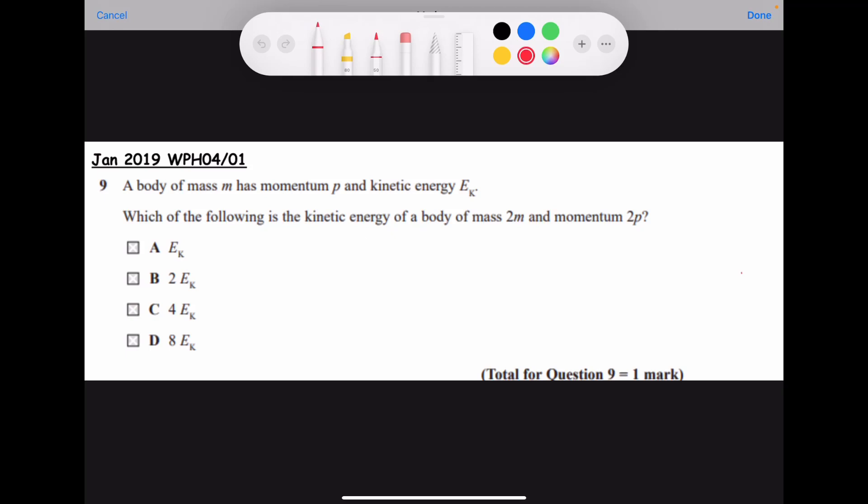A body of mass m has momentum p and kinetic energy ek. Which of the following is the kinetic energy of a body of mass 2m and momentum 2p?